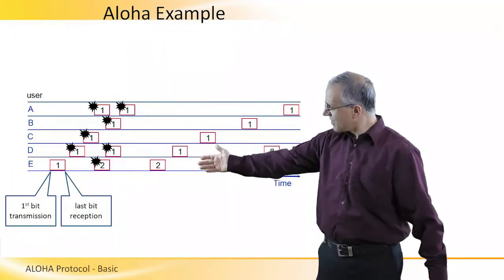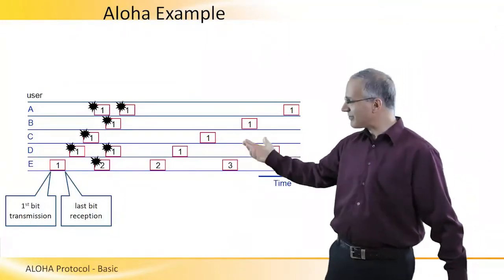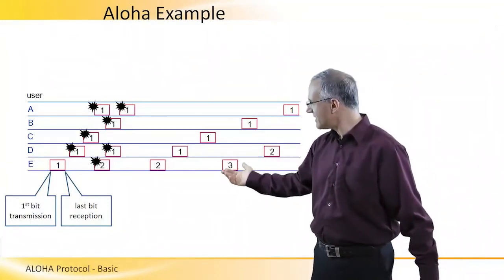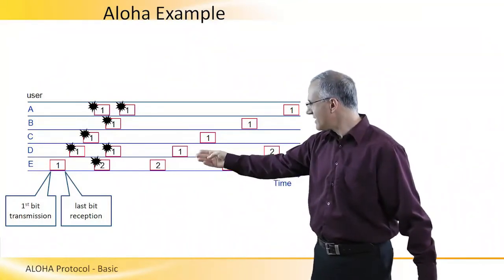And then each of these users is picking a random time for retransmission. As you can see, user E was successful, and then D and C.